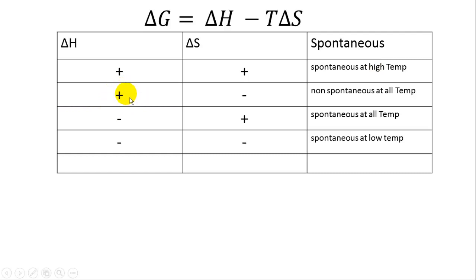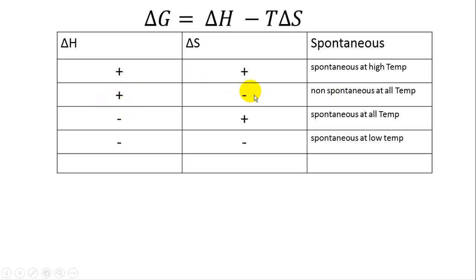Consider another situation where delta H is positive — an endothermic reaction that requires heat, so not favored. If delta S is also negative, that's not favored either because it represents more order rather than more disorder. So this combination is going to be non-spontaneous at all temperatures.